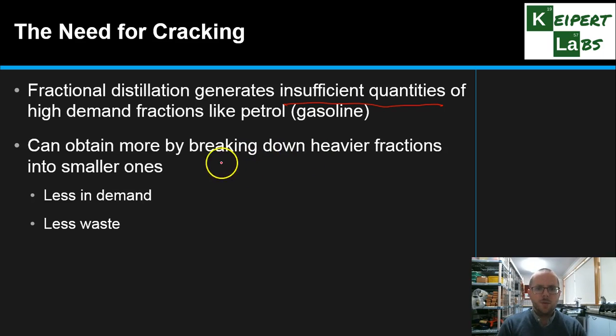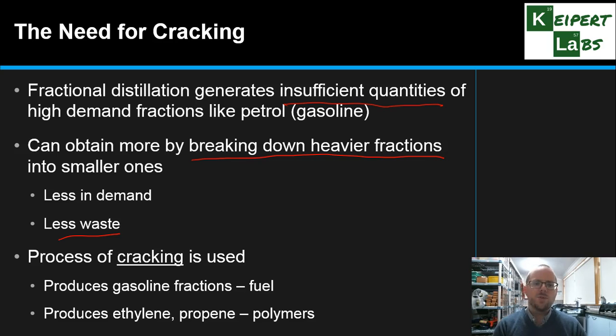And so what we do is we take some of those heavier fractions that are less in demand and we can break them down into the smaller ones. Because they're less in demand, we're using up something that isn't being already used for something else. And it also means that we are wasting less. When we're finding a different use for something that may otherwise go to waste. And so we use the process called cracking.